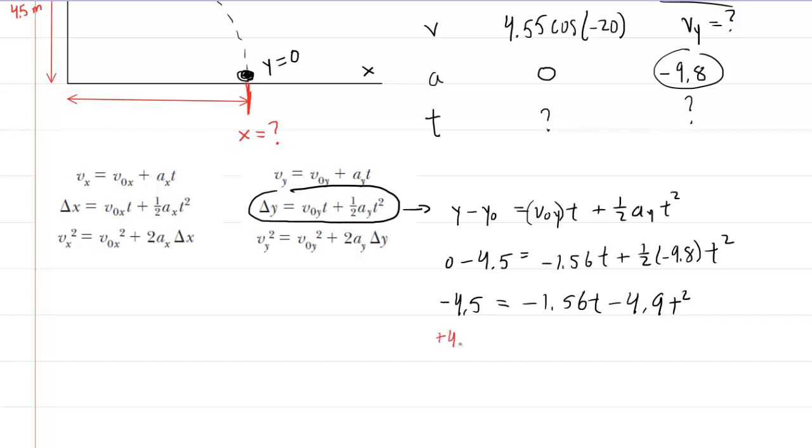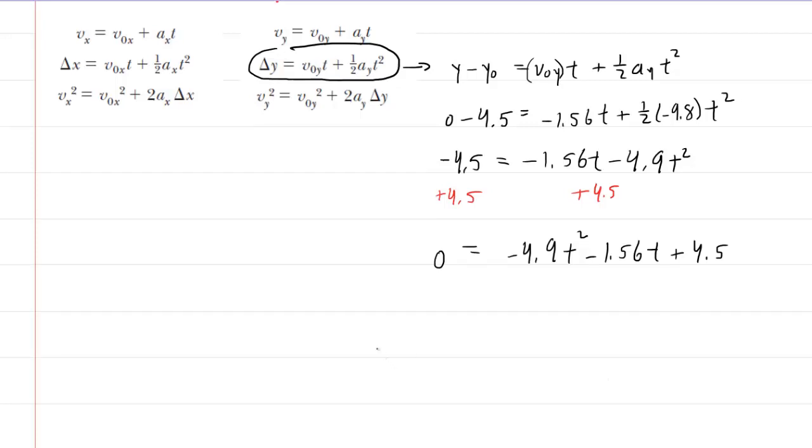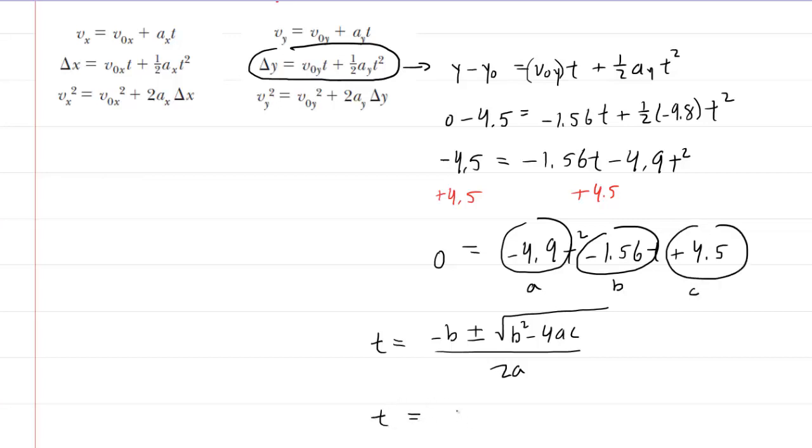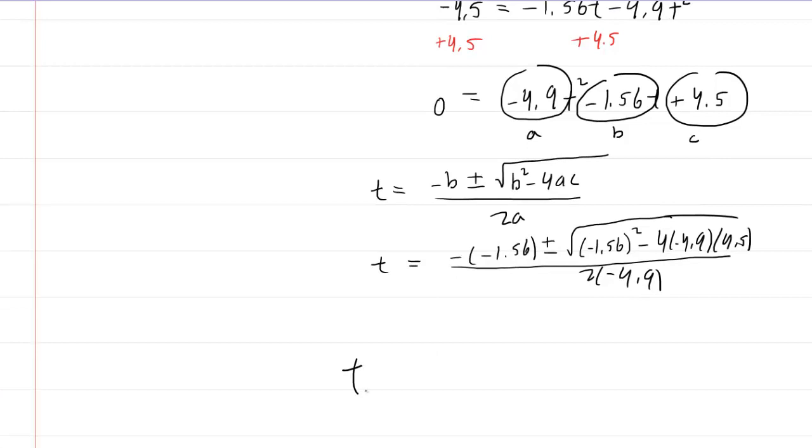Now, this is a quadratic equation. So we have to use the quadratic formula, unfortunately. So we'll add the 4.5 over to the other side. We now have 0 is equal to the following. Let's rearrange the terms in standard order. We'll have negative 4.9 t squared minus 1.56 t and then plus 4.5. Now, of course, the quadratic formula is negative b plus or minus the square root of b squared minus 4ac all divided by 2a. This number right here in front of the t squared is your a. The coefficient of t is your b. And the constant term is your c. So we will go ahead and plug those in. We'll have negative negative 1.56 plus or minus square root of negative 1.56 squared minus 4 times negative 4.9 times 4.5. And this will be all divided by 2 times negative 4.9. You're going to want to carefully punch this into your calculator. And when you do so, you'll get two values because you're going to have to do one that is a plus and another one that is a minus.